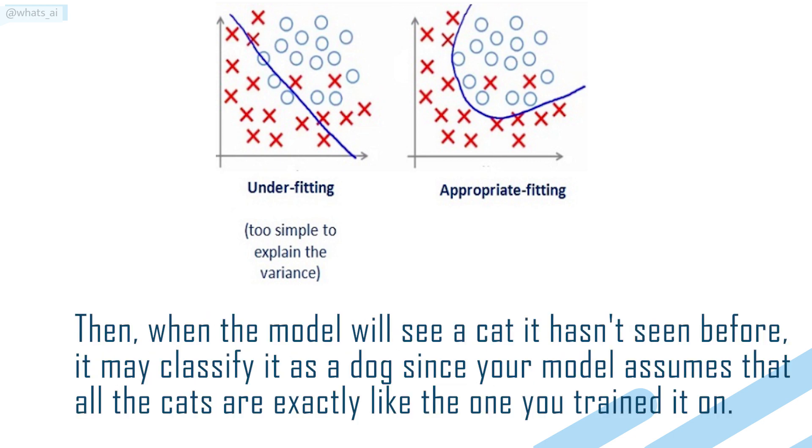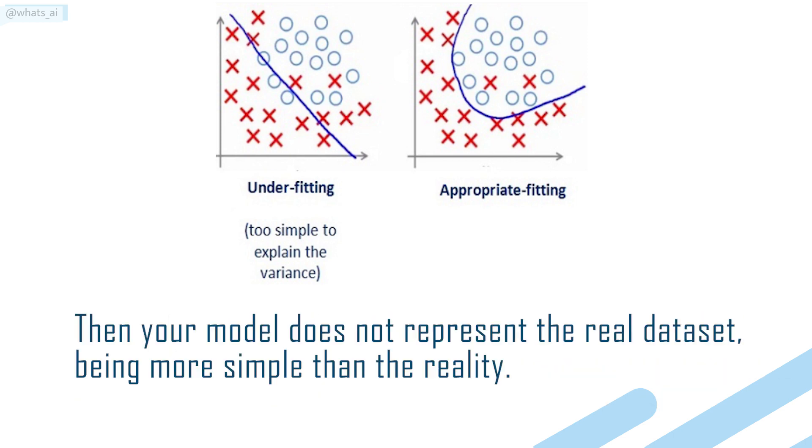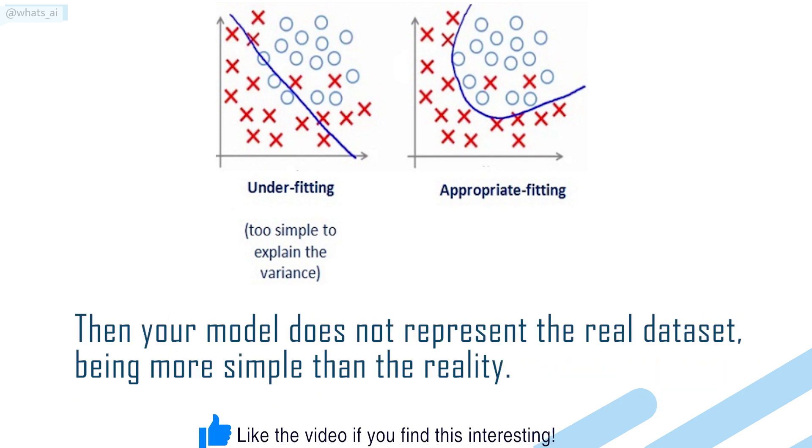Then, when the model will see a cat it hasn't seen before, it may classify it as a dog since your model assumes that all the cats are exactly like the ones you trained it on. Then your model does not represent the real dataset, being more simple than the reality.